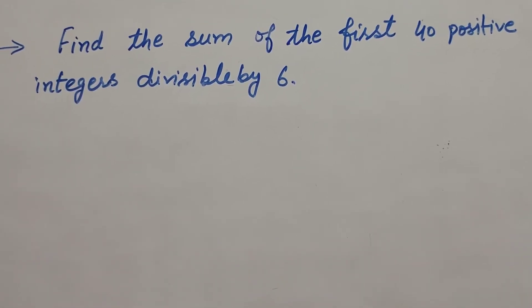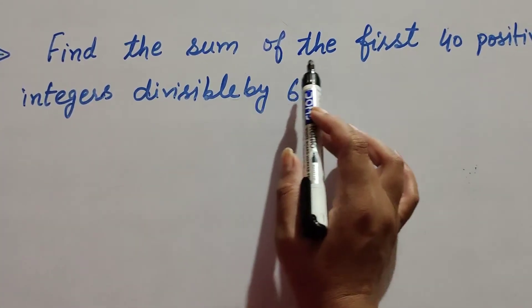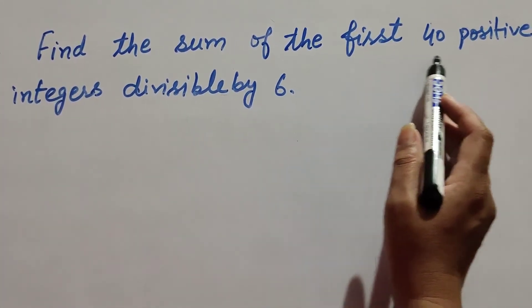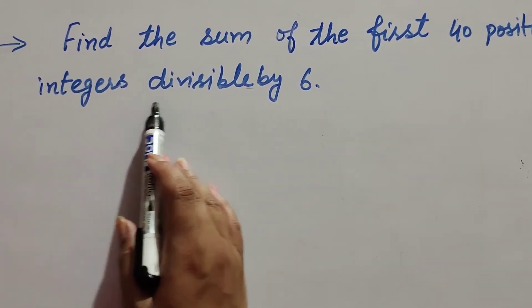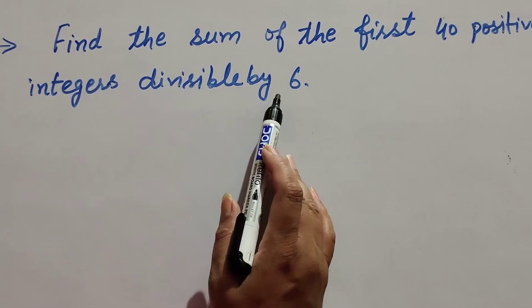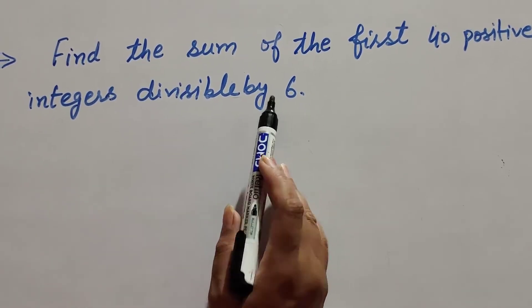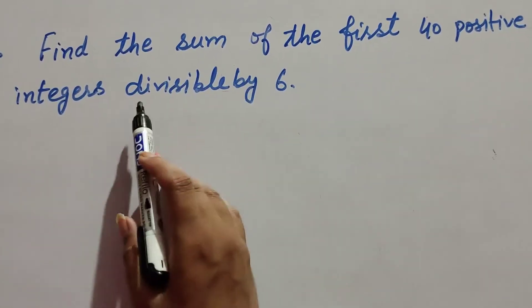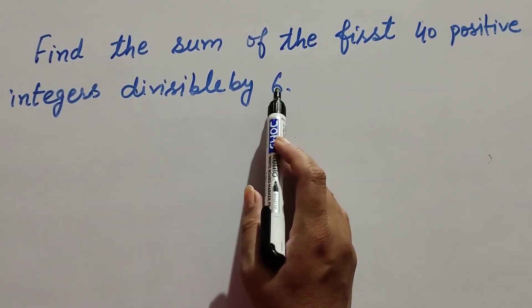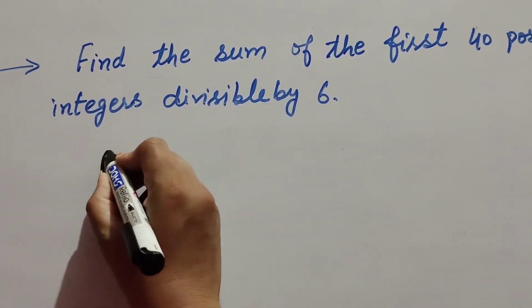Hello friends, welcome to my channel. In this video we discuss finding the sum of the first 40 positive integers divisible by 6. First we find the 40 positive integers that are divisible by 6.